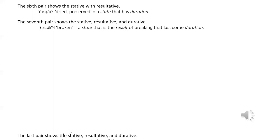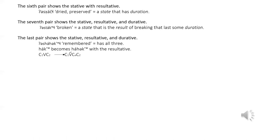The final model, meaning 'remembered', has all three, but the resultative has a different form from the other models. In this case, the resultative is marked by reduplication rather than a vowel change. The first consonant and vowel of the root word are combined, and the first vowel takes the stress, so the root becomes reduplicated with the resultative.